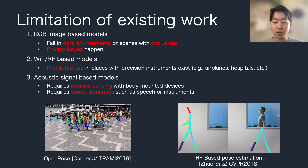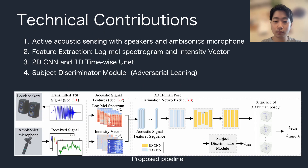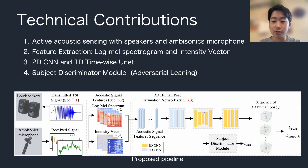We conduct 3D human pose estimation based on active and non-invasive acoustic sensing. This slide shows our technical contributions. For active acoustic sensing, we use two speakers and an ambisonics microphone. Then we extract two acoustic features: log-mel spectrogram and intensity vector, based on the received four-channel signals.